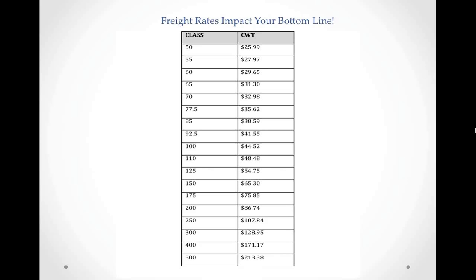As you get into your lower density items, anything usually below six pounds per cubic foot runs into the potential of incurring cubic capacity charges, which would also affect your freight rates considerably.